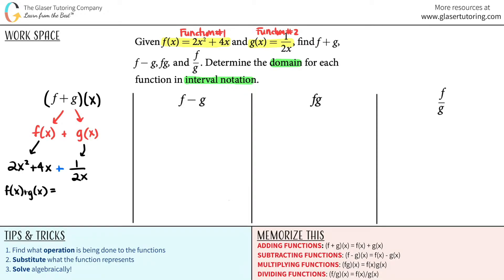Can we simplify this? We could kind of clean it up, but not really. I'm just going to leave it. 2x squared plus 4x plus 1 over 2x. That's the new function. I can't really do anything and pull out a 2 because the 2 is in the denominator here, not in the numerator. So this would be the answer to the first part.